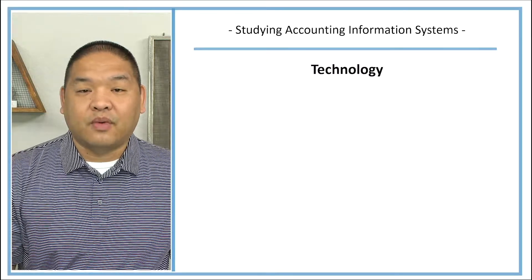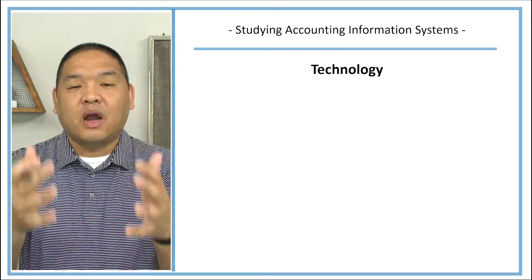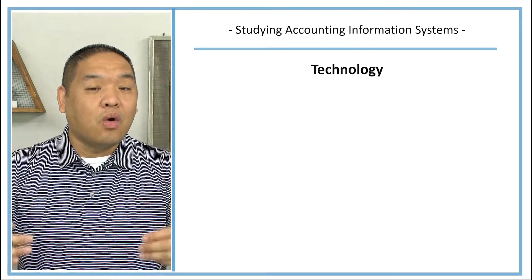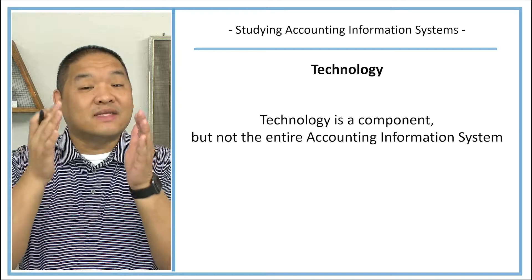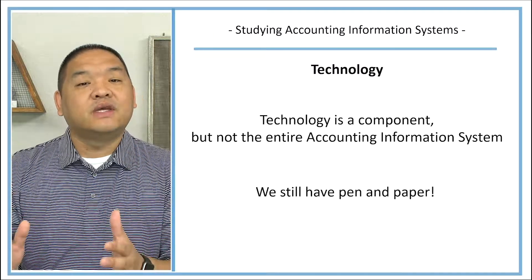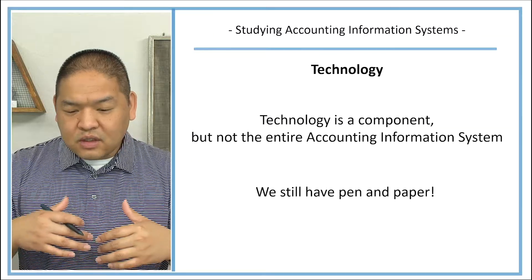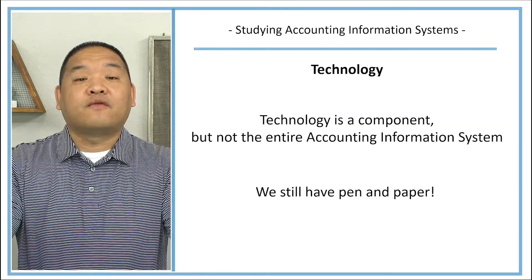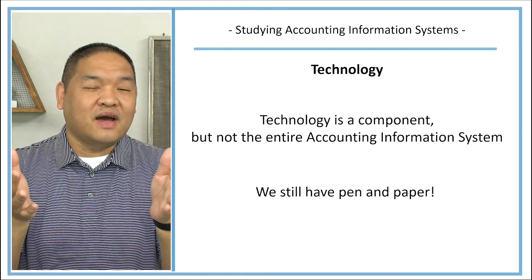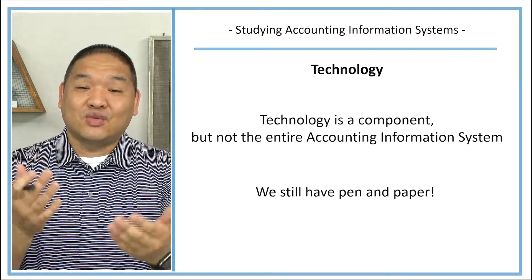Now technology is an important part. When we think about systems or information technology or information systems, you're probably thinking about technology. So it's important to understand what technology's role is in accounting information systems. Now technology is a component, but not the entire accounting information systems. And the reason why is we still have pen and paper. So think about, for instance, a utility bill.